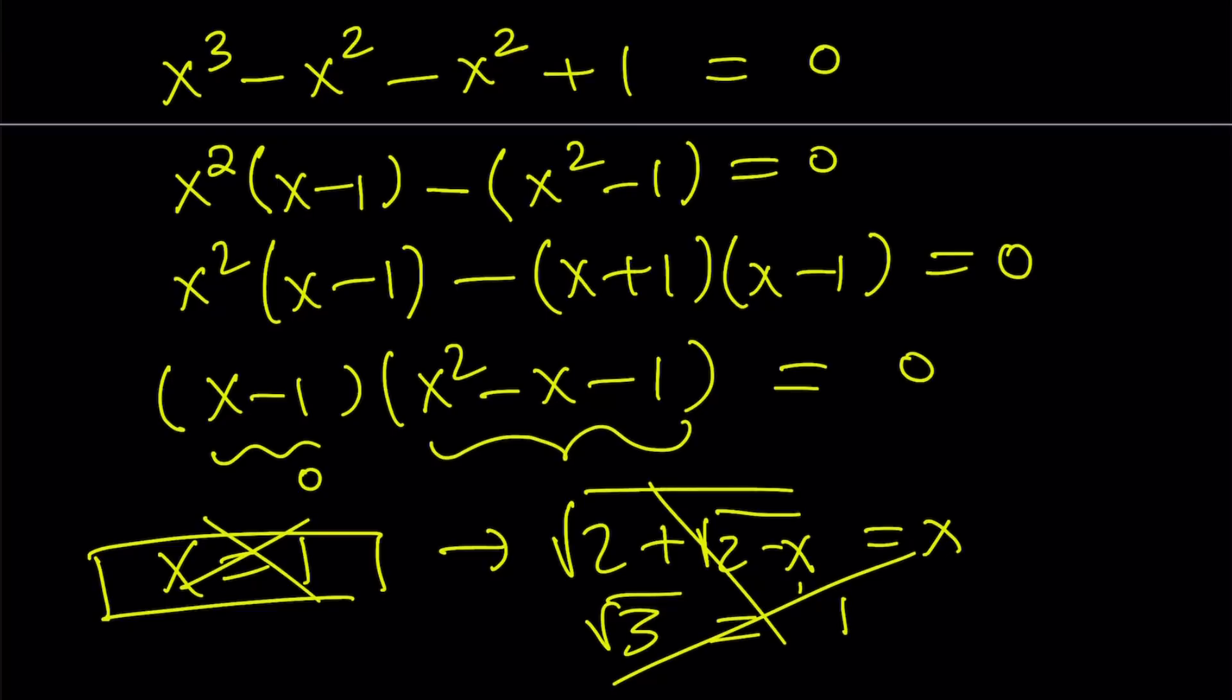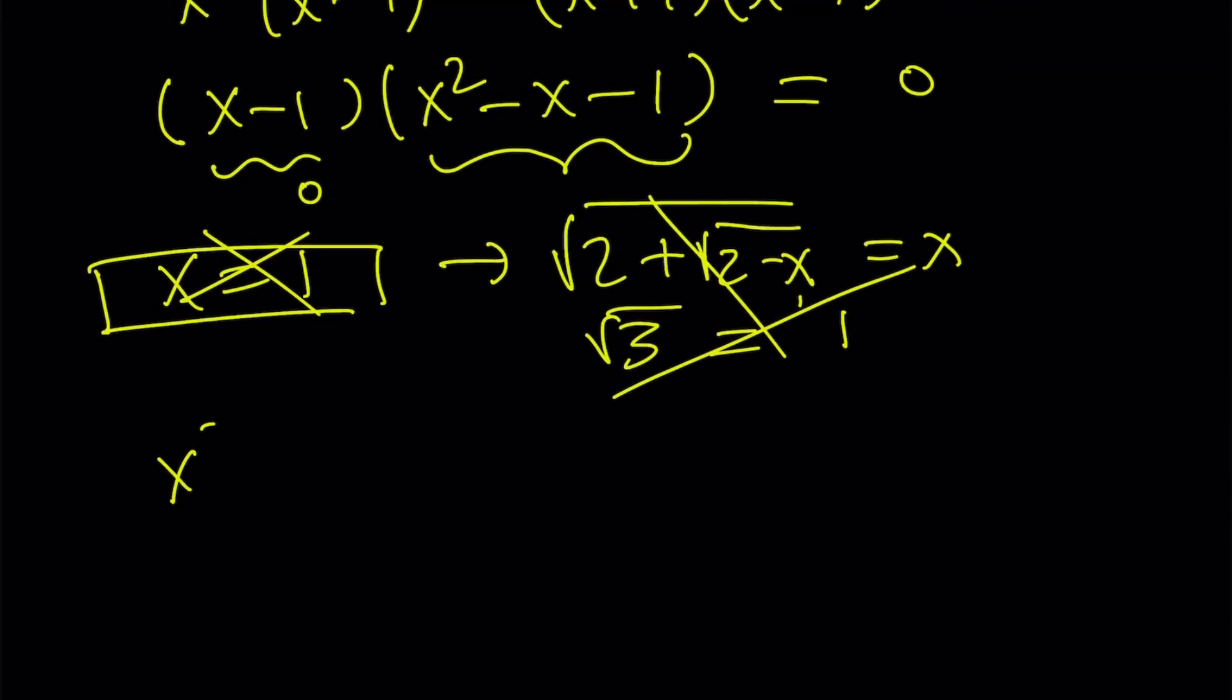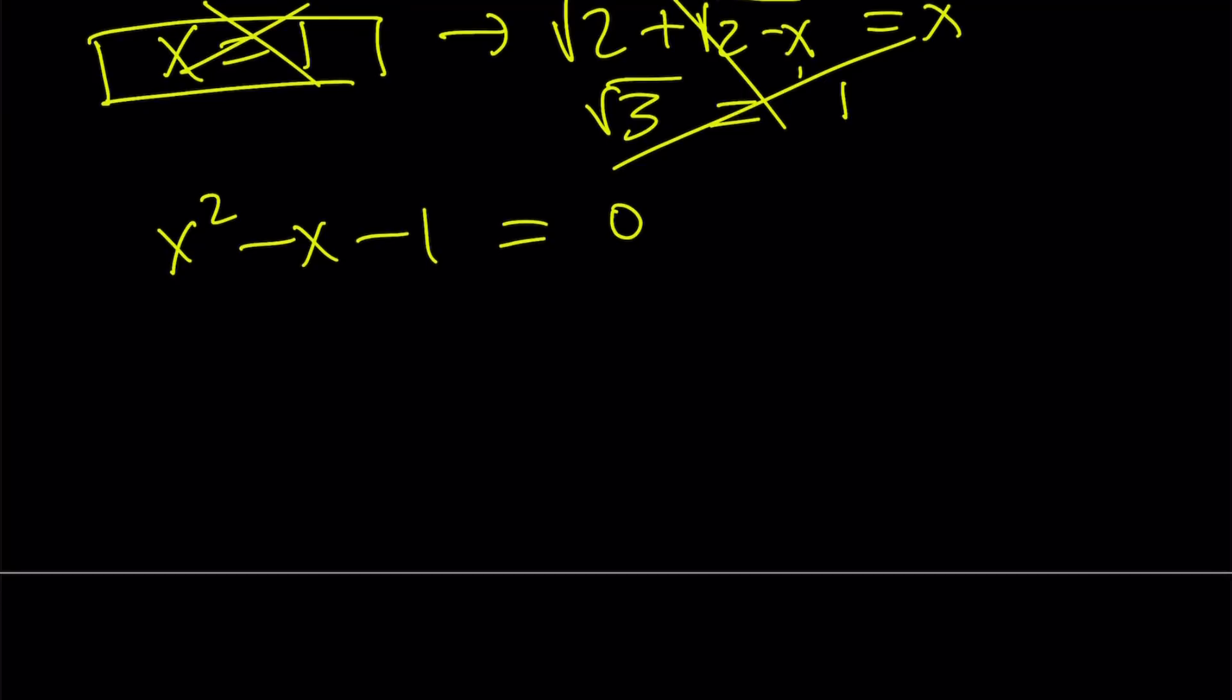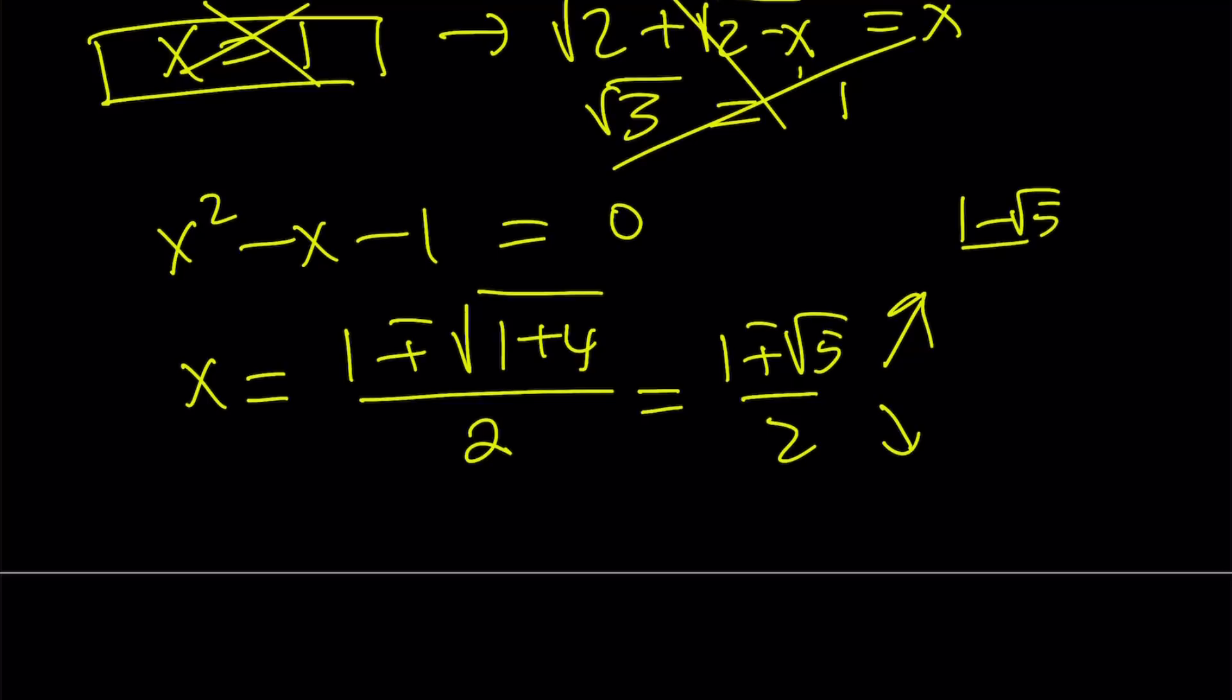So we end up with the quadratic equation. Let's go ahead and solve this quadratic by using the quadratic formula, and this is where the surprises are. Alright, hopefully you already figured it out. Now from here, we get x equals negative b plus minus the square root of b squared minus 4ac. You know the story. Divide by 2, and this is equal to 1 plus minus the square root of 5 over 2. But this gives us two solutions: 1 minus root 5 over 2, and 1 plus root 5 over 2.